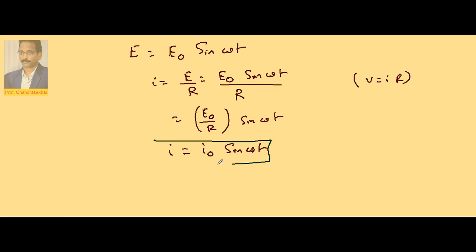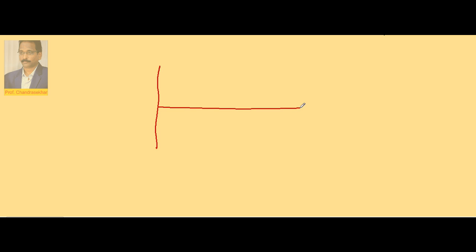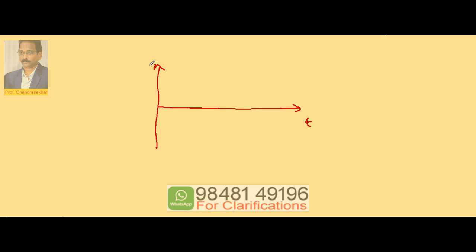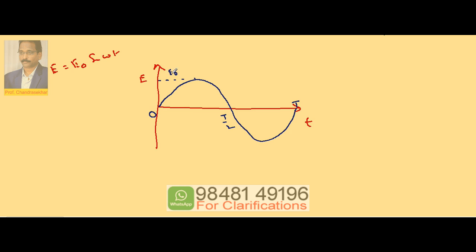So the peak value of current I₀ is given by the peak EMF divided by resistance: I₀ = E₀/R. Now let us draw a graph with time on the x-axis and EMF on the y-axis. Since E = E₀ sin(ωt) is a sine graph, we can represent it showing zero, t/2, and t on the time axis, with the peak value E₀.